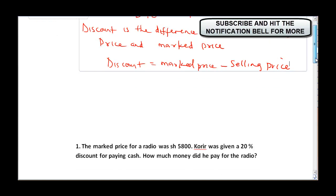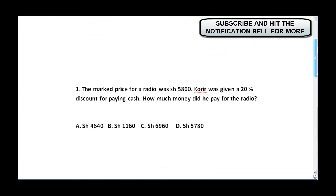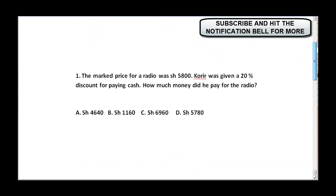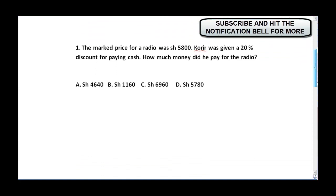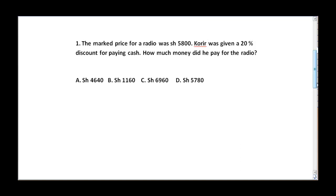We are now going to solve some questions you can expect in your KCPE Mathematics exam. Question one says: the marked price for a radio was 5800 shillings. A customer was given a 20% discount for paying cash. How much did he pay for the radio?